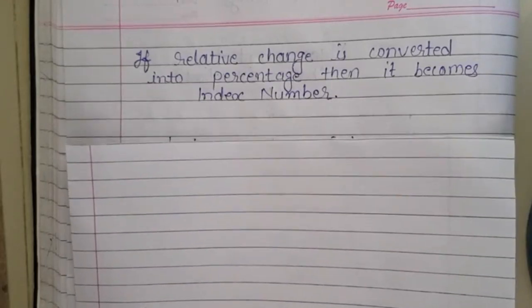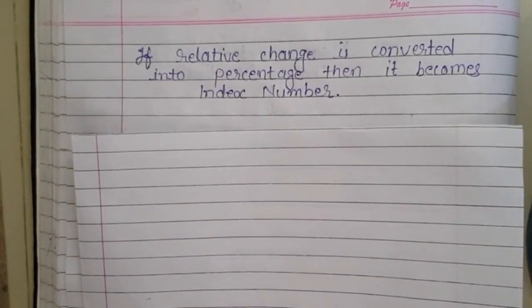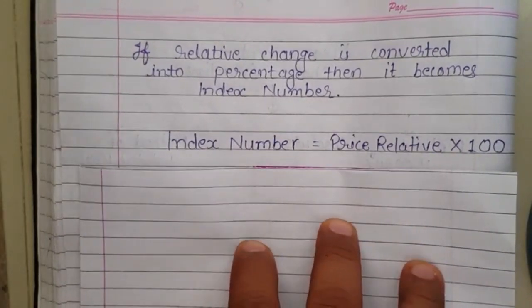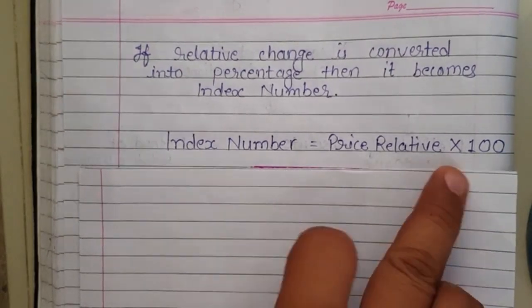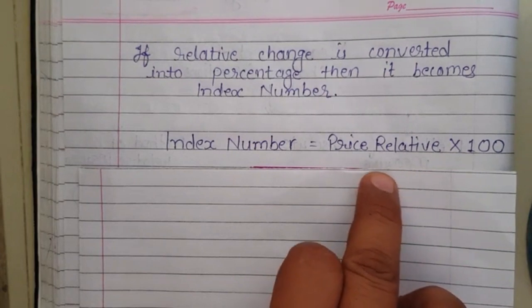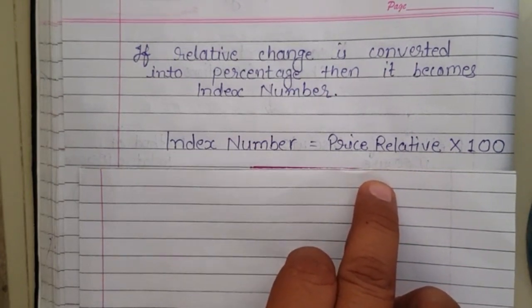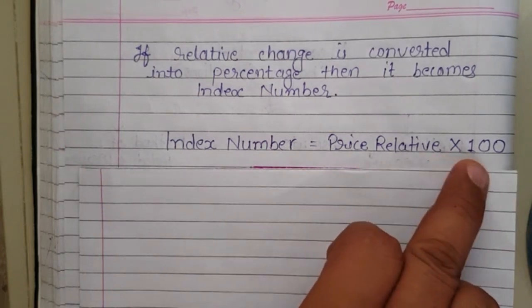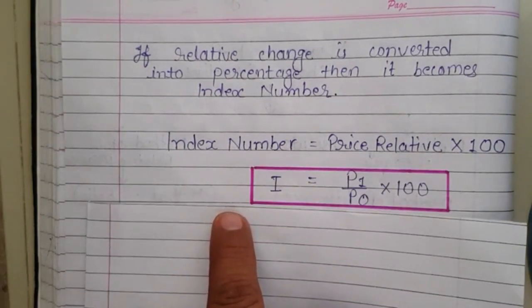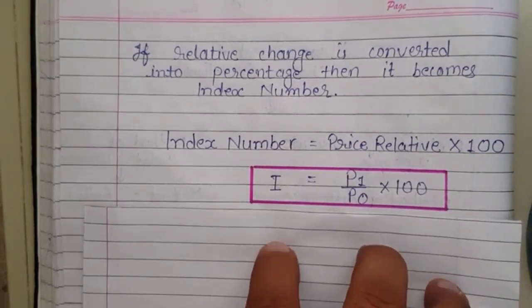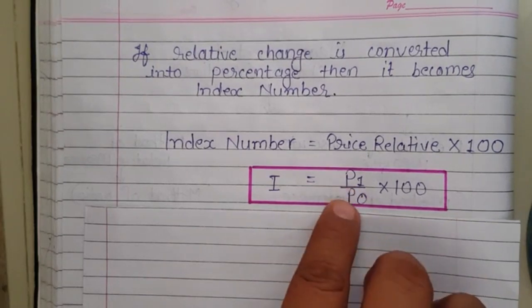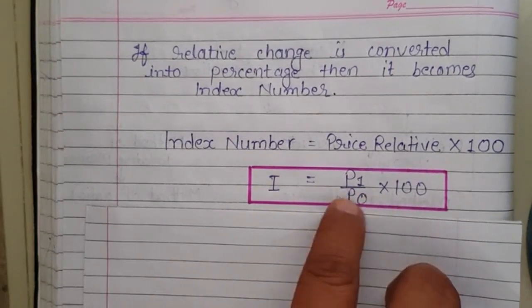Our main question was: what is index number? If relative change is converted into percentage, then it becomes index number. To find index number, you have to convert the price relative into 100 — that is, multiply the ratio by 100. So the index number formula is: I = P1 upon P0 multiplied by 100, where I stands for index number, P1 upon P0 is the price relative, and multiplying by 100 gives the index number.